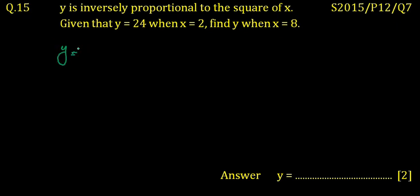y is inversely proportional, so we write y is equal to k over x squared. So it is y equals k over x squared, and you have to find the value of y when x is equal to 8.